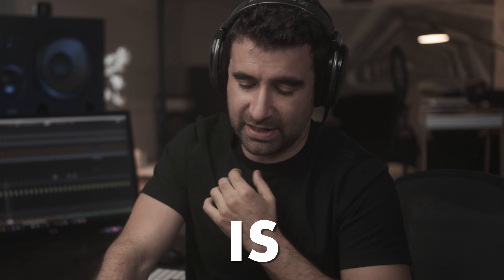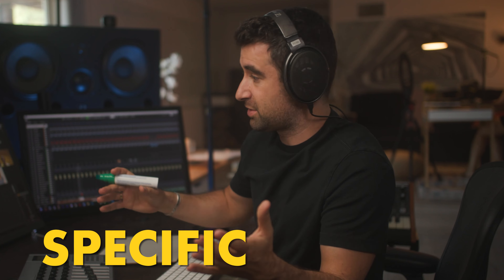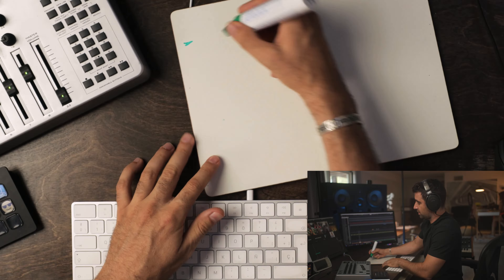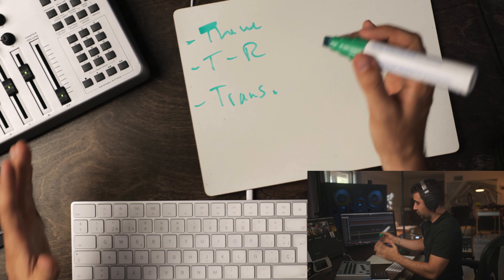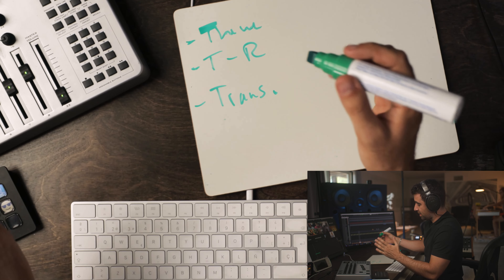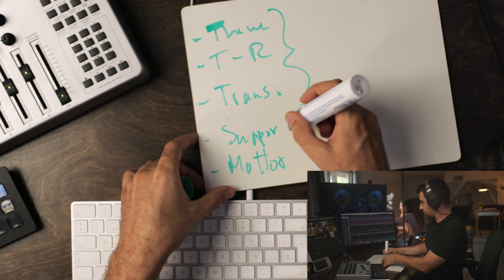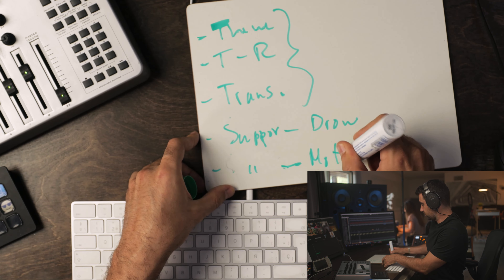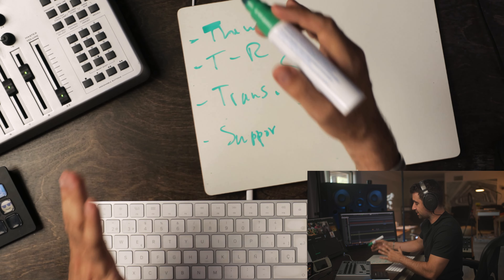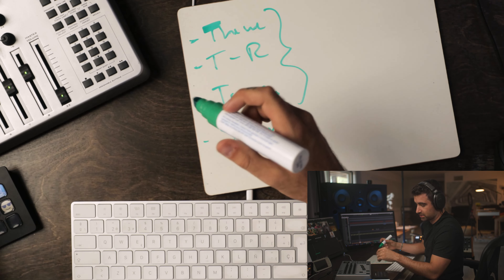If I were to simplify what film scoring is — you're scoring a specific scene and thinking, what do I do? There are many things you can do, but I always start with one of these three: theme, tension/release, and transition. Those are the three main things. After that you can have support — drone support, module support — but those enhance the three main ones.